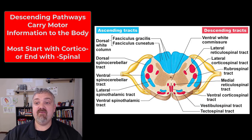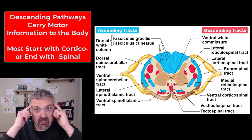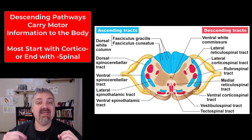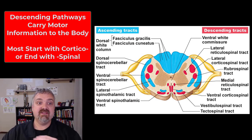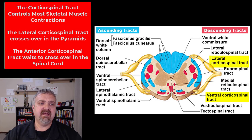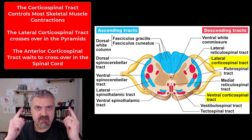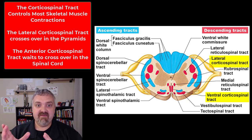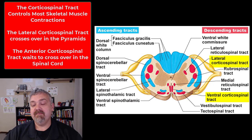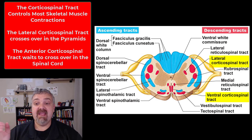Here we see the descending pathways. As a general rule of thumb, your descending pathways should either start with the term cortico, meaning they start in the cerebral cortex, or most of them will end in spinal, which means they're going from the cortex to the spinal cord — a reminder that they're descending tracts. The two most important ones by far are the two corticospinal tracts. They start in the motor cortex and control your body by traveling down to the spinal cord. We have the anterior corticospinal tract, which is about 15% of them, and this one travels down the same side of the spinal cord. Then you have the lateral corticospinal tract, which is 85% of the corticospinal nerves, and they actually cross to the other side before traveling down the spinal cord.